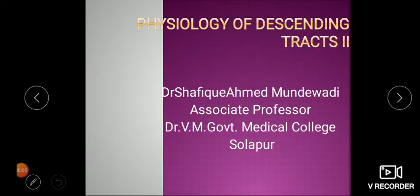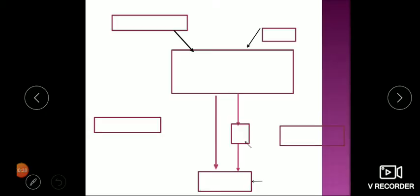Let's continue the discussion of descending tracts part 2. In the previous lecture we discussed the physiology of descending tracts part 1, where we saw the classification of different tracts and learned in detail regarding the corticospinal tract. Now let's move further. The same diagram explains that whenever there is an action from the nervous system, it is either in response to a sensory stimulation or an idea from the mind, and this goes to the cortical association area.